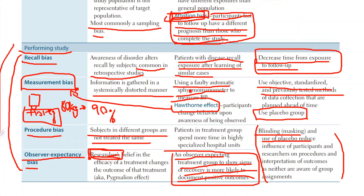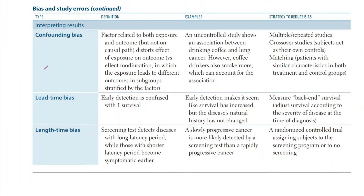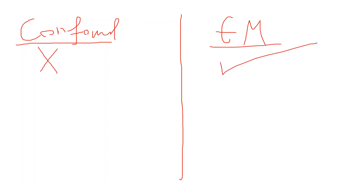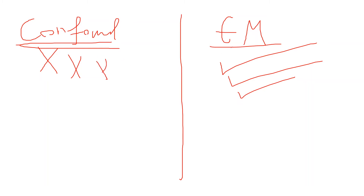Those are all the biases under performing a study. Next we have confounding bias, lead time bias, and length time bias — all under interpreting results. The most important is confounding bias. I want to make one thing very clear: confounding is bad — you want to get rid of it. Effect modification is good — it should be included in the study. Confounding is bad; effect modification is good.